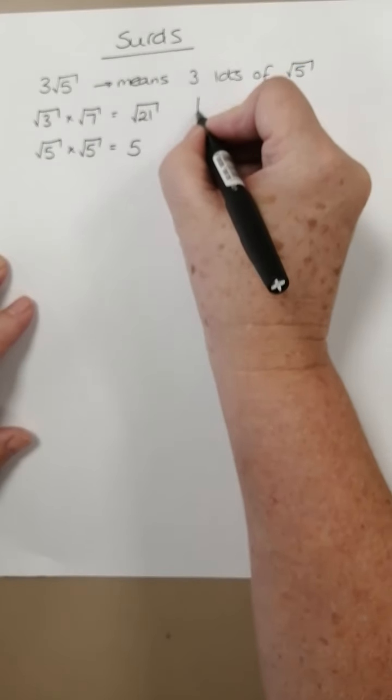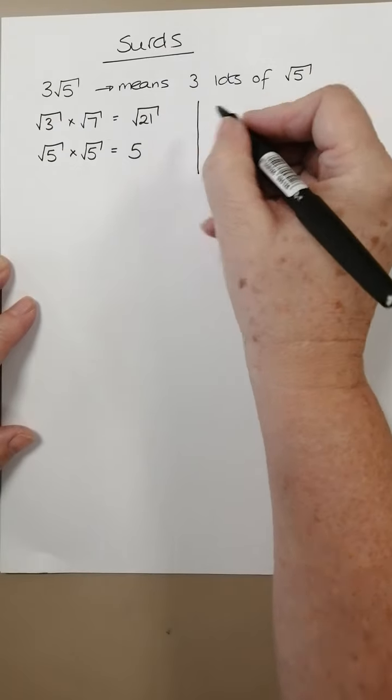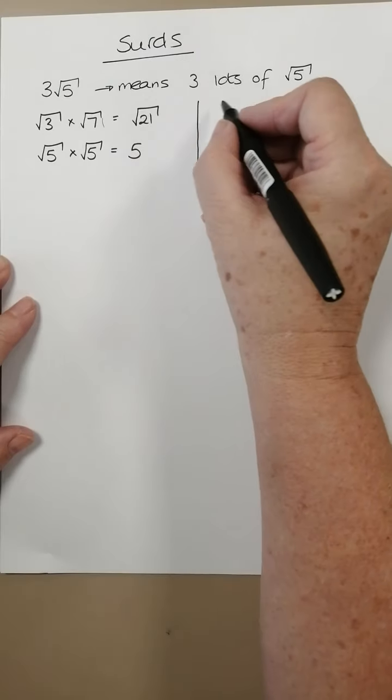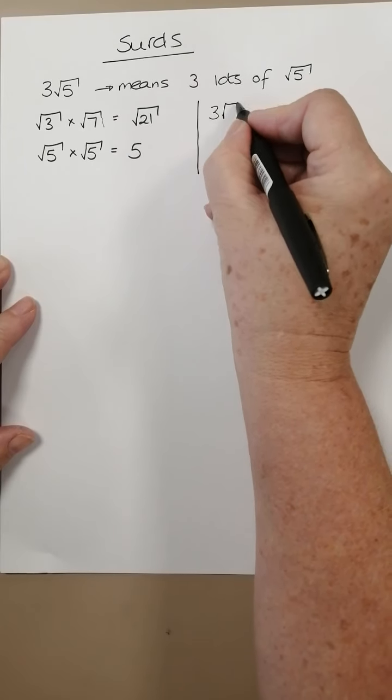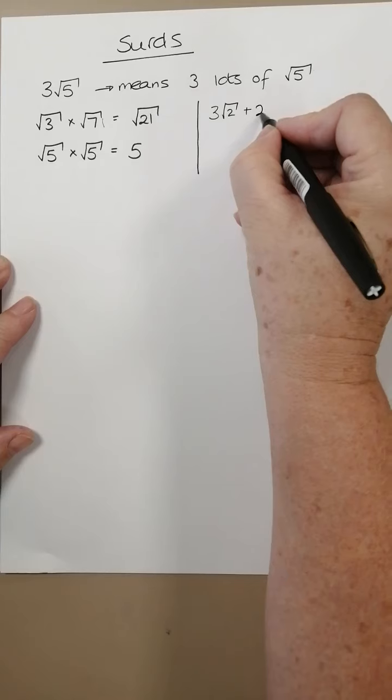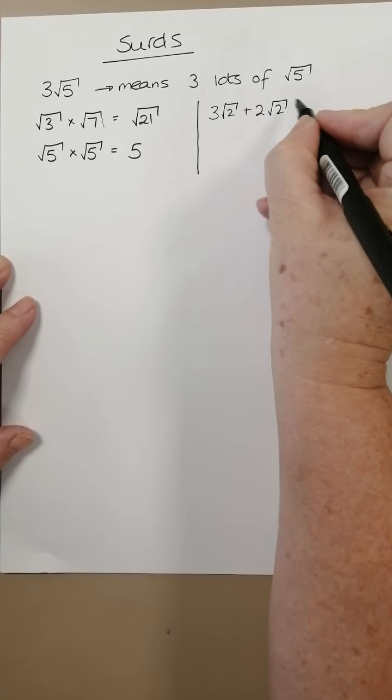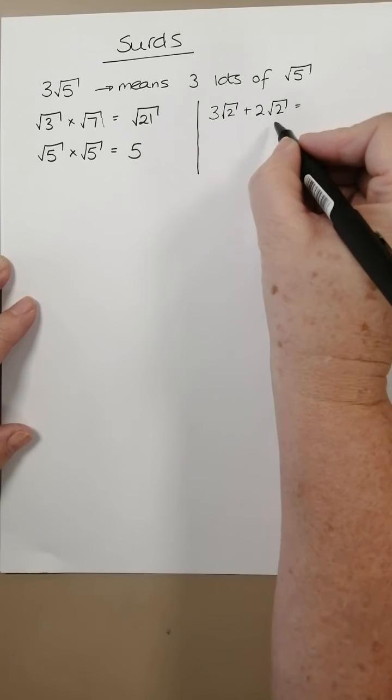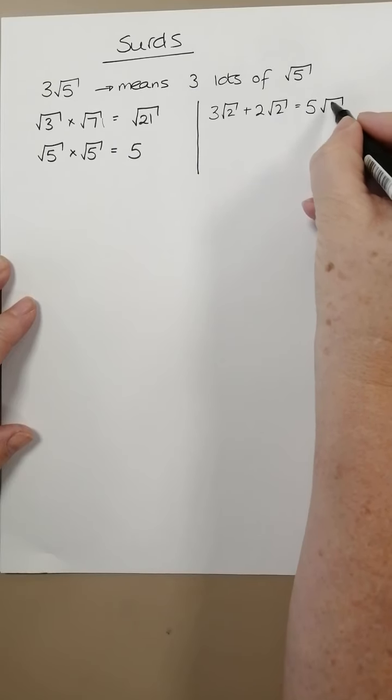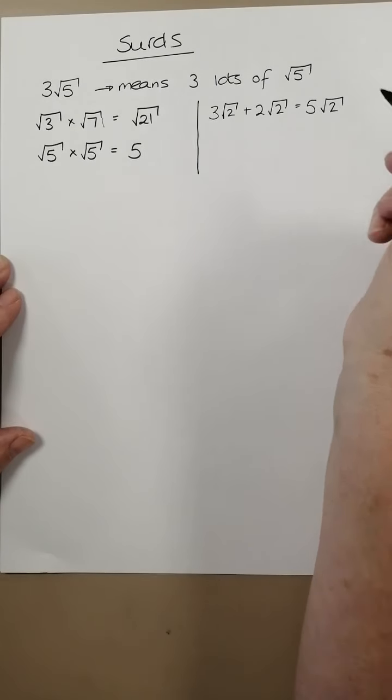If we are adding surds, then as long as the surd, the bit in the square root, is the same, then we can add them. So we could have 3 root 2 plus 2 root 2, and that would be 3 lots of root 2 plus 2 lots of root 2, which would be 5 lots of root 2.